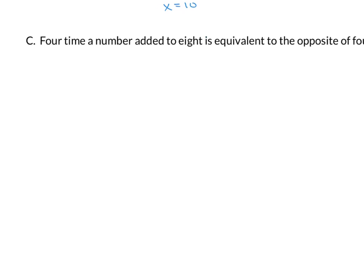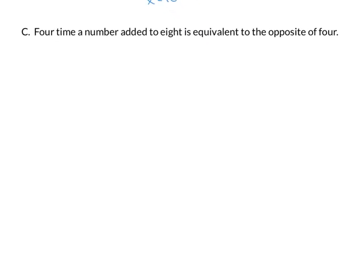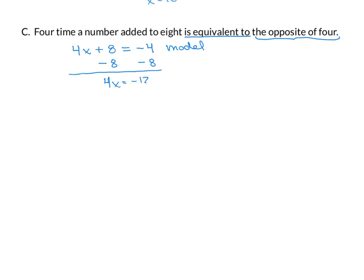Last one: '4 times a number added to 8 is equivalent to the opposite of 4.' So we have 4x added to 8 is equivalent to — that is our equal sign — and the opposite of 4 just means change the sign, so this is negative 4. Our model is 4x plus 8 equals negative 4. We subtract 8 from both sides: 4x equals negative 12. Divide by 4: x equals negative 3.